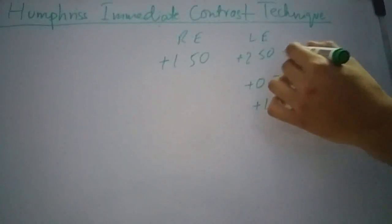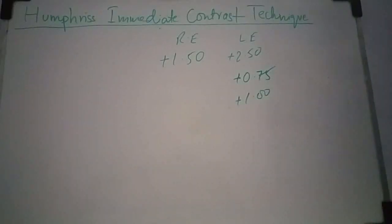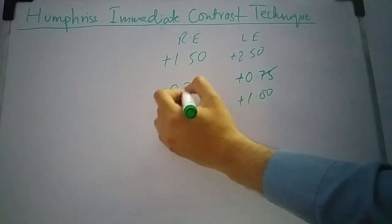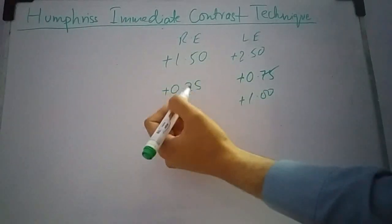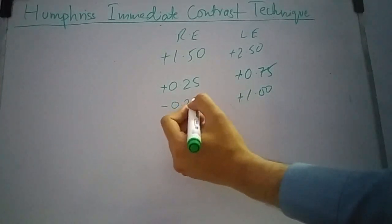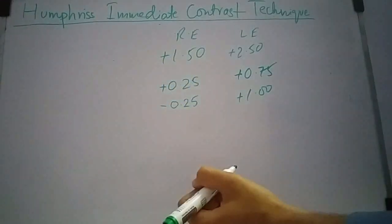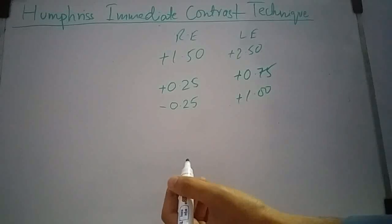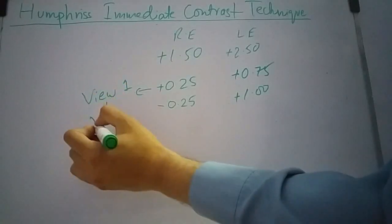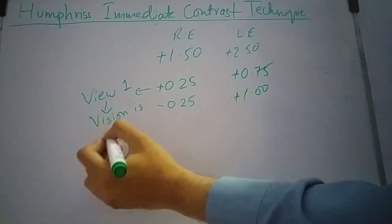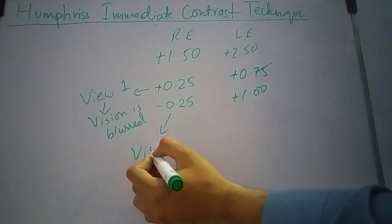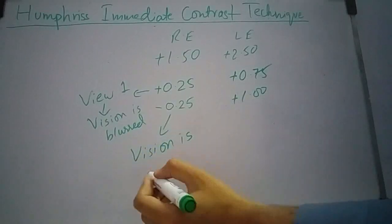So that vision is decreased. Now I will put plus 0.25 diopter sphere lens in front of the right eye for 3 to 4 seconds, then minus 0.25 diopter sphere lens in front of the right eye. I will ask the patient which view is clear. The goal is that the patient should say that with view number 1, vision is blurred, and with view number 2, vision is not affected.